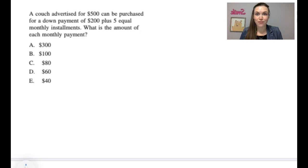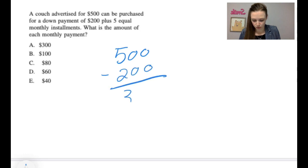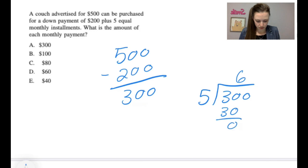A couch advertised for $500 can be purchased for a down payment of $200 plus 5 equal monthly installments. What is the amount of each monthly payment? So we have $500, and then we're going to subtract $200 for the down payment, which leaves us with $300. And there are 5 equal payments. So basically, we just need to go 5 goes into $300. So 5 goes into 3, 6 times, which is 30, bring down another 0, 5 goes into 0, 0 times, so that each monthly installment is $60. The answer is E.